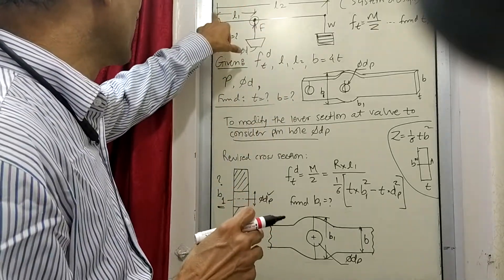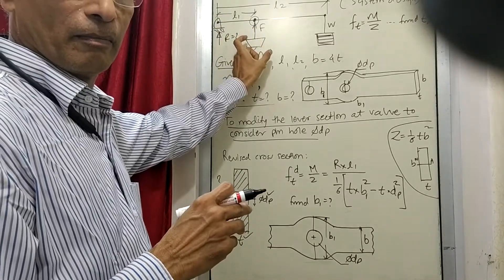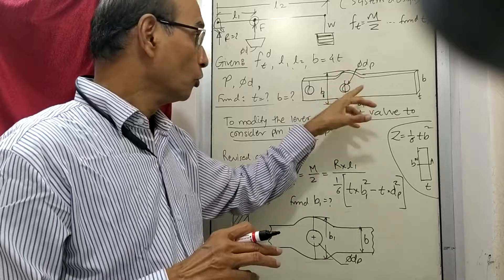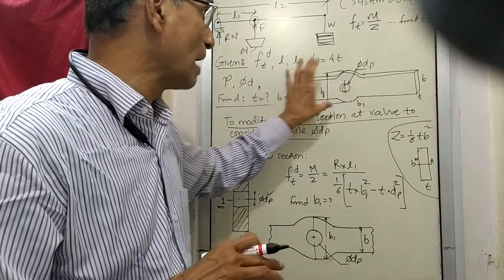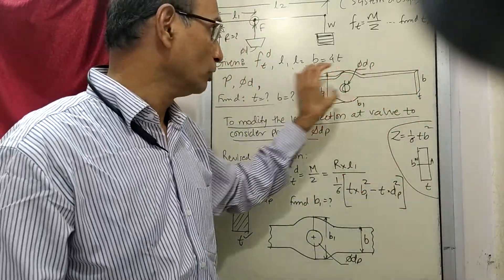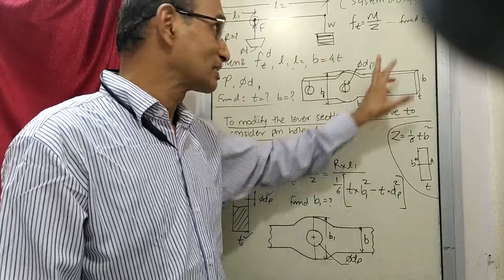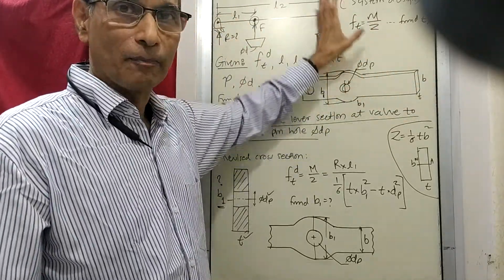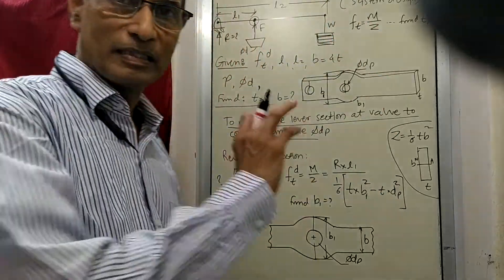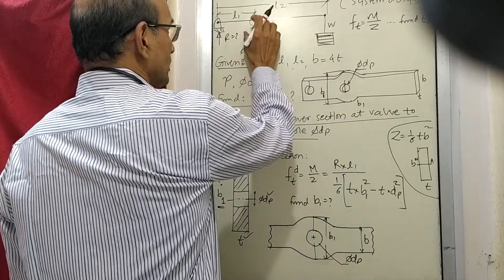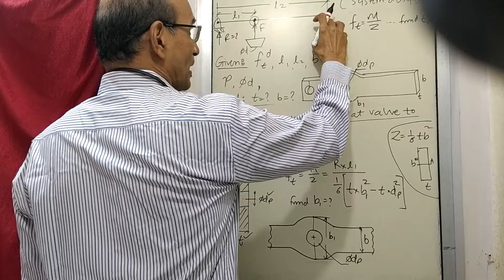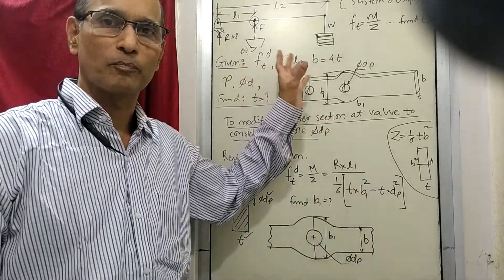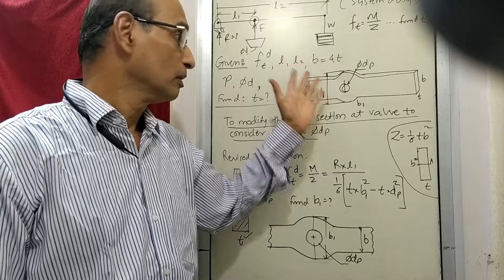Now the next thing is to design the fulcrum bracket and the wall bracket. At the moment we have designed the lever, decided the cross section, designed the reverse cross section, and decided the pin hole at both locations. The lever dimensions are complete. But since this is a system design exercise, we are supposed to design all parts involved — lever, lever bracket, fulcrum bracket, and the wall arrangement — using simple rules and proportions.